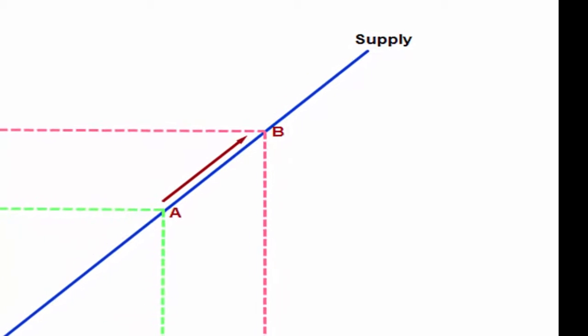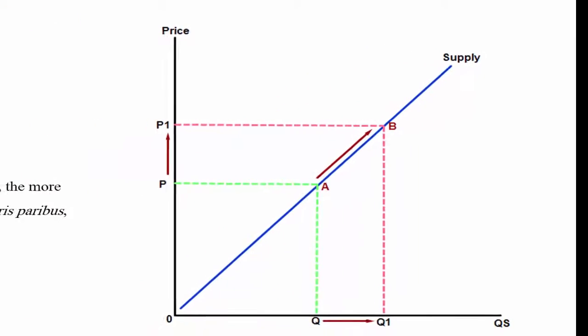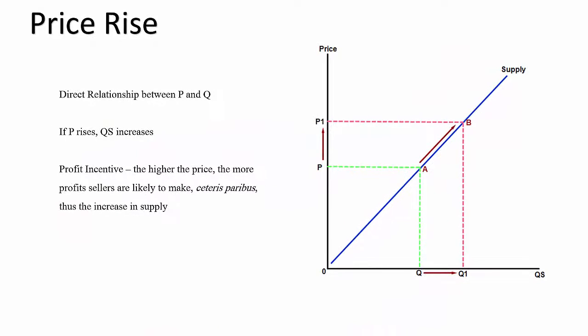Why is it that a higher price causes an increase in quantity supplied? The answer is because of the profit incentive. The higher the price that a good is sold at, the more profit that sellers are likely to make assuming all other things equal. That's what ceteris paribus means, and therefore suppliers will increase the amount supplied.